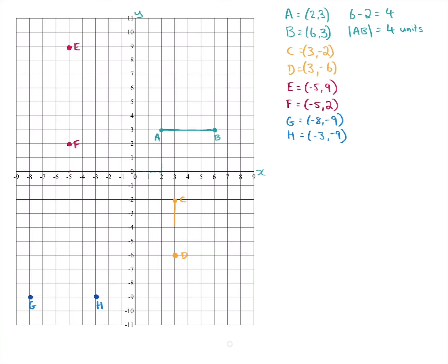Now let's look at C and D. I'll draw a line between them. If you have grid paper you can count the squares: one, two, three, four — so the distance between C and D is four units. We write CD with lines on either side to denote distance. C and D form a vertical line, while A and B formed a horizontal line.